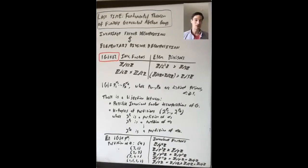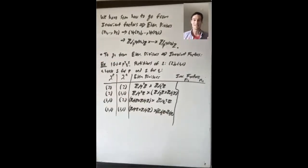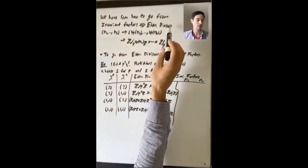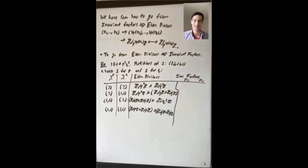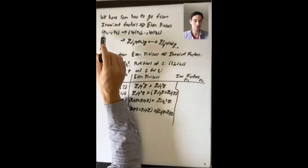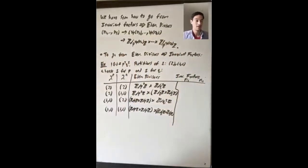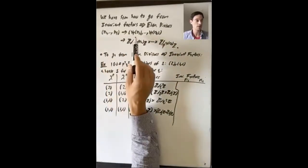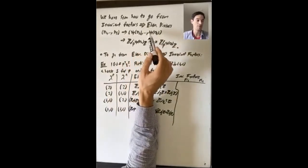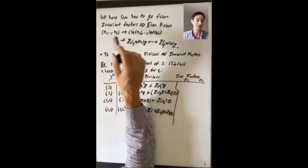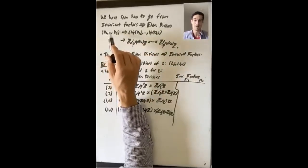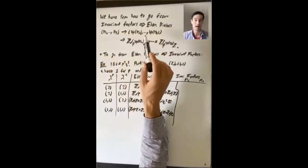I'm going to pause and erase, and we'll do one more example where the order of G has more than one prime divisor and we go from elementary divisors to the possible invariant factors. We've already seen how to go from invariant factors to the elementary divisor decomposition. Here's a summary: if you have invariant factors n1, n2, up through ns, for each prime p dividing the order of the group, you take vp(n1), vp(n2), up to vp(nt), where vp(n) is the number of times p divides n.